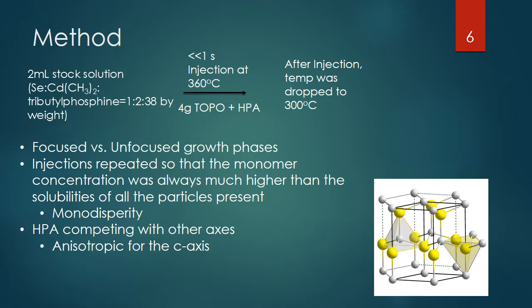In order to form a monodisperse quantum rod, after the injection and the temperature drop to the growth phase, once they thought the focused phase was over, they would take the heat off, stop the reaction, and take a small aliquot of the nanoparticles they had made.